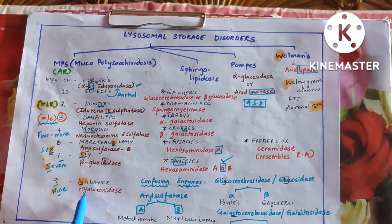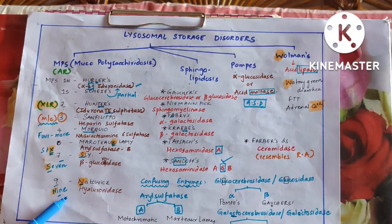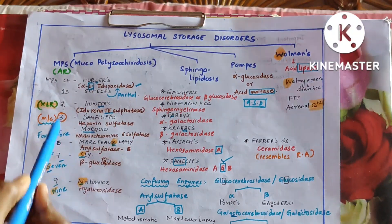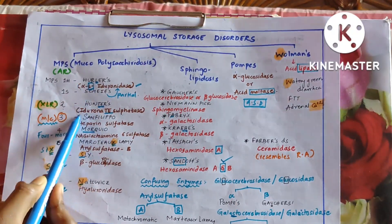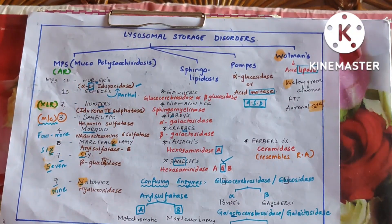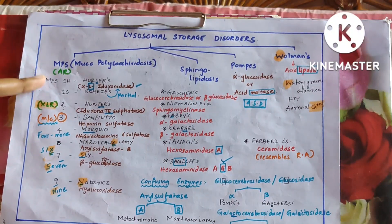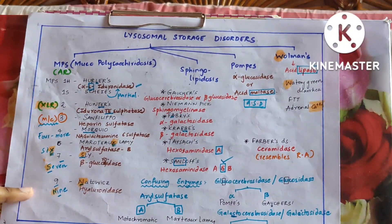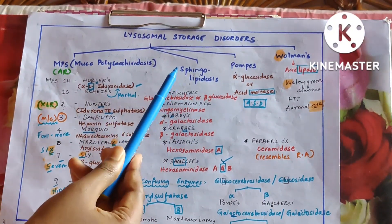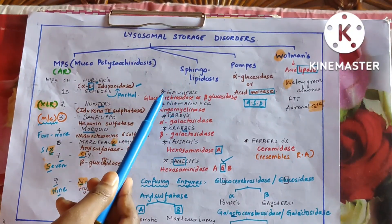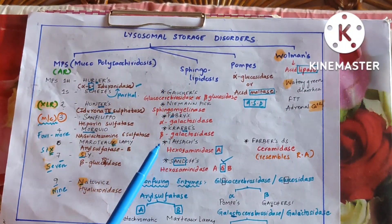Natowicz is hyaluronidase. You don't need to remember all the names — you just need to remember the first two: alpha-L-iduronidase and iduronate sulfatase. Hurler's and Scheie's are the same enzyme; Scheie's is just the partial deficiency of alpha-L-iduronidase.